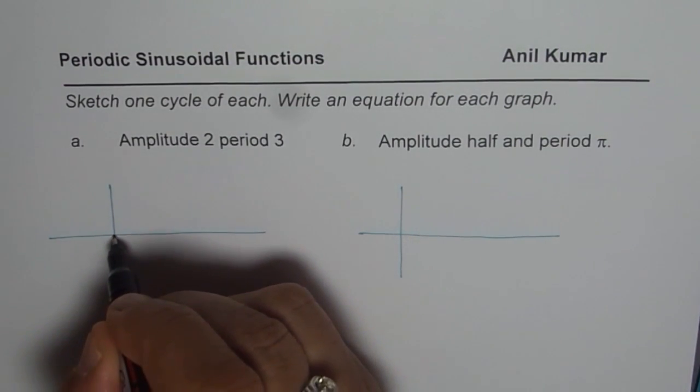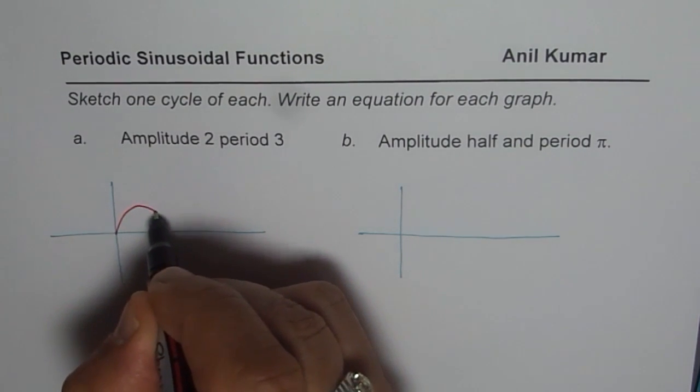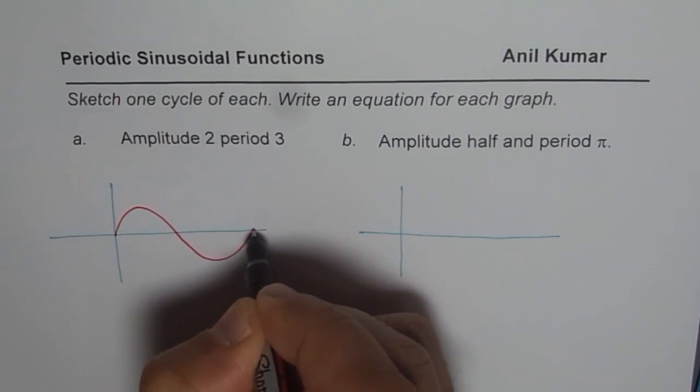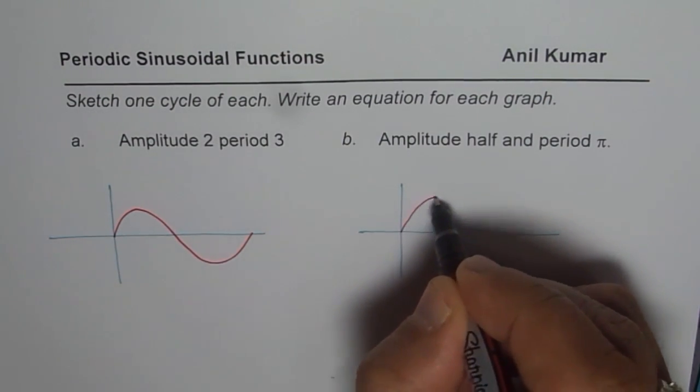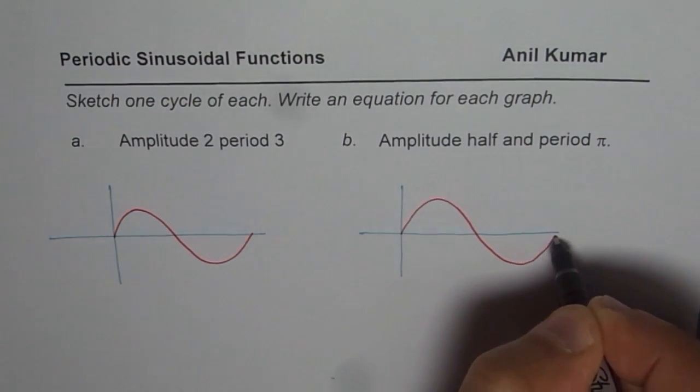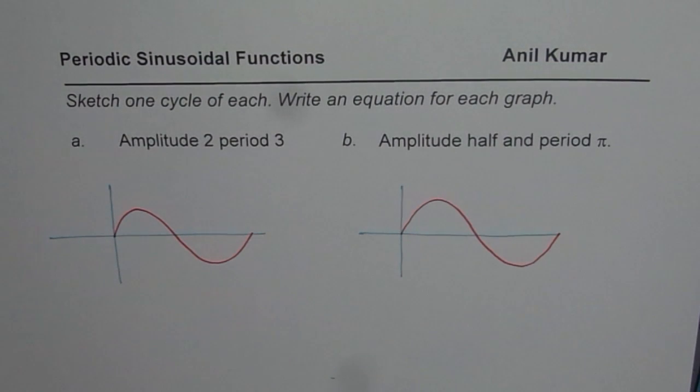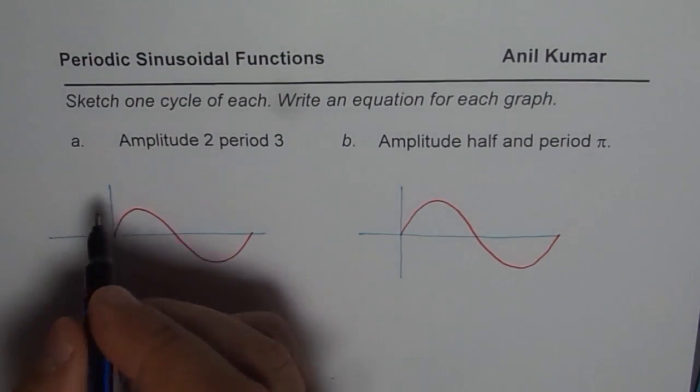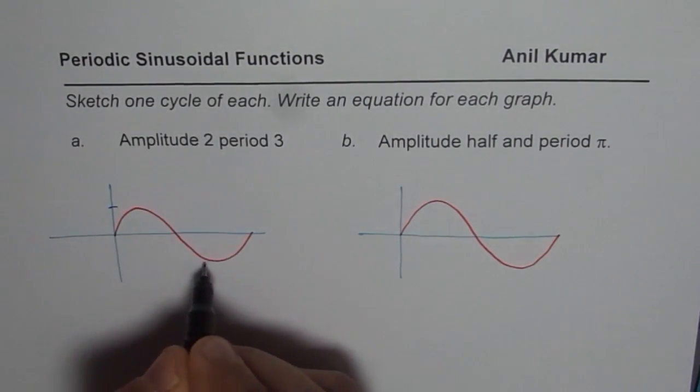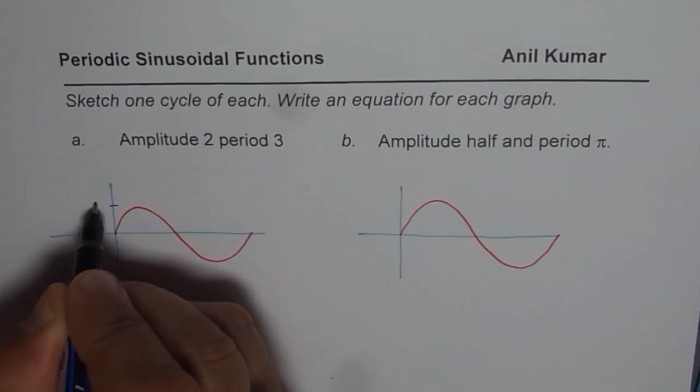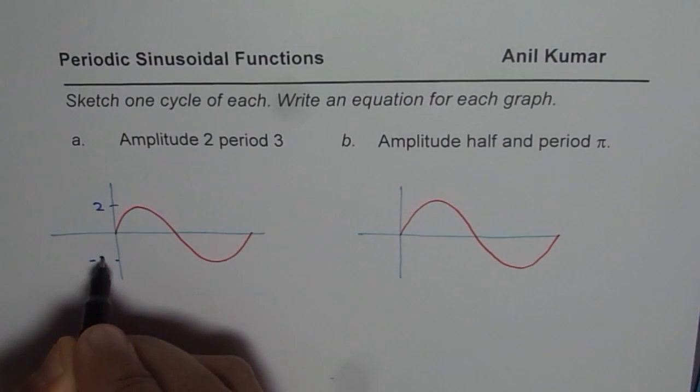So let me sketch one cycle of sine function first, and then we label it. That is how I do it. So this is, and I prefer this method. So first sketch a sine function. Now fill in the required things. We need amplitude of 2, that means maximum it should go to 2 and minimum also to 2. So that becomes the amplitude of 2.